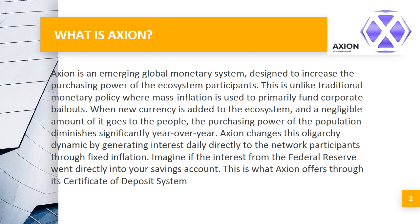This is unlike traditional monetary policy where mass inflation is used to primarily fund corporate bailouts. When new currency is added to the ecosystem, only a negligible amount goes to the people, and the purchasing power of the population diminishes significantly year over year. Axion changes this oligarchy dynamic by generating interest daily directly to network participants through fixed inflation.